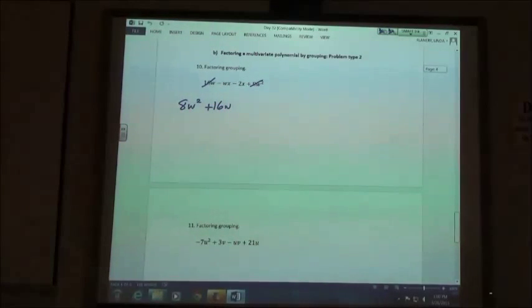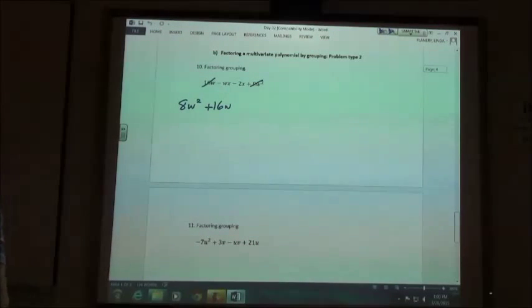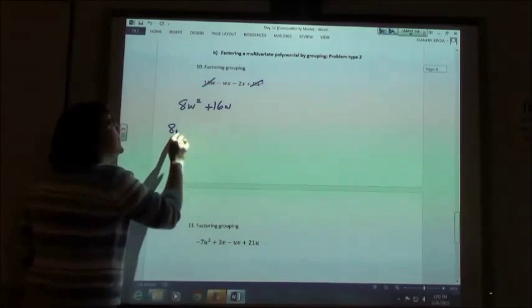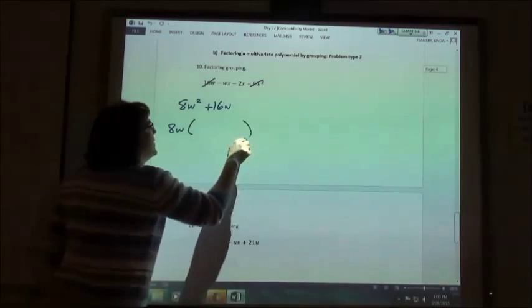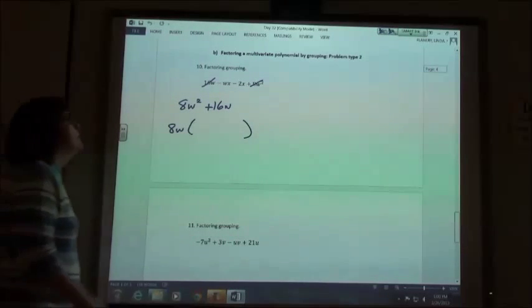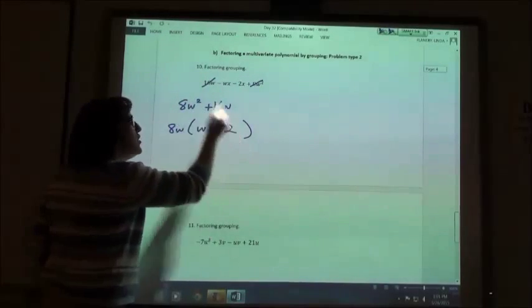So I'm going to start with the one with the highest exponent, just like we did on those first ones that were in the right order. So out of my 8w squared and my 16w, I can divide them both by 8w. And so if I divide out the 8w, I would get w plus 2.